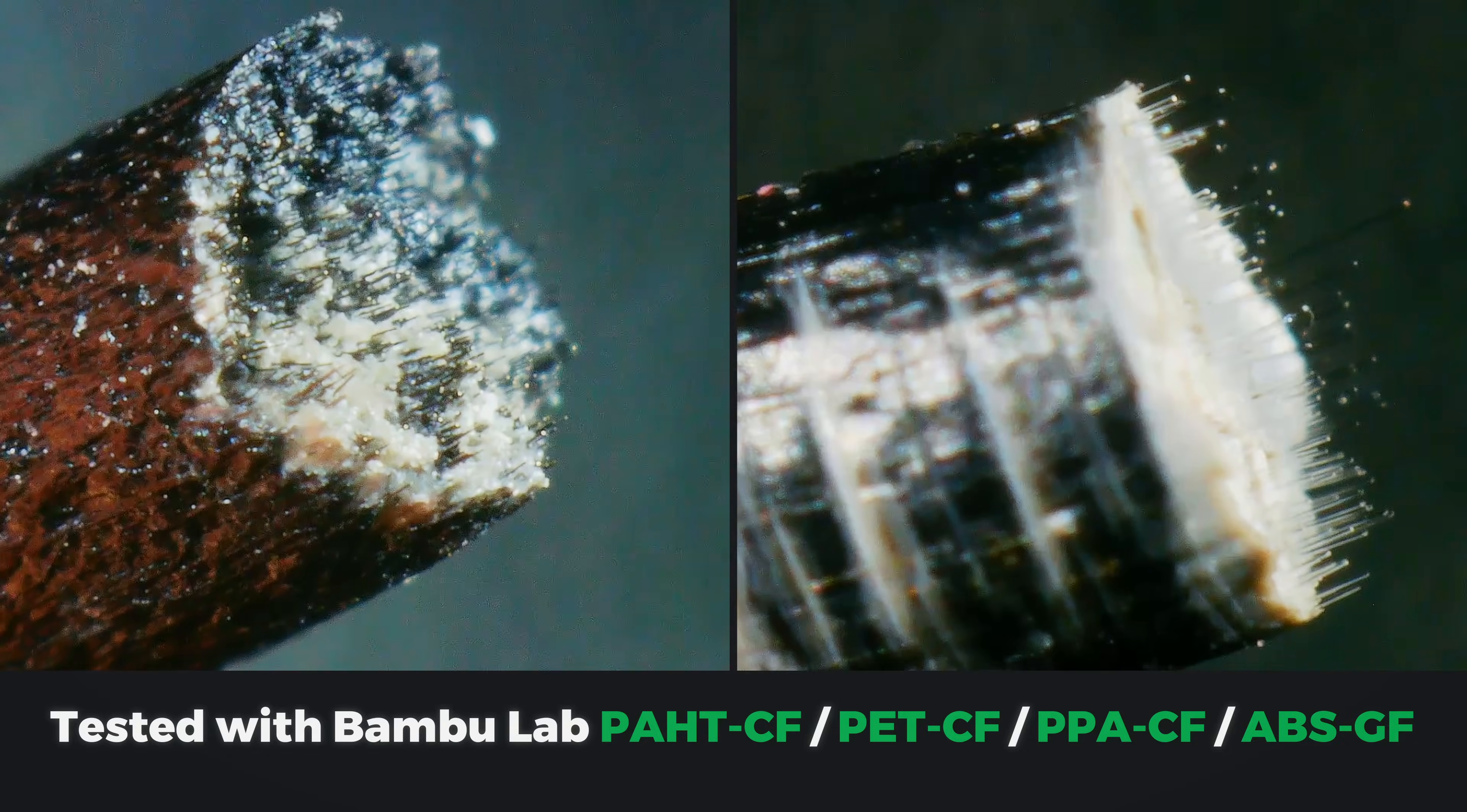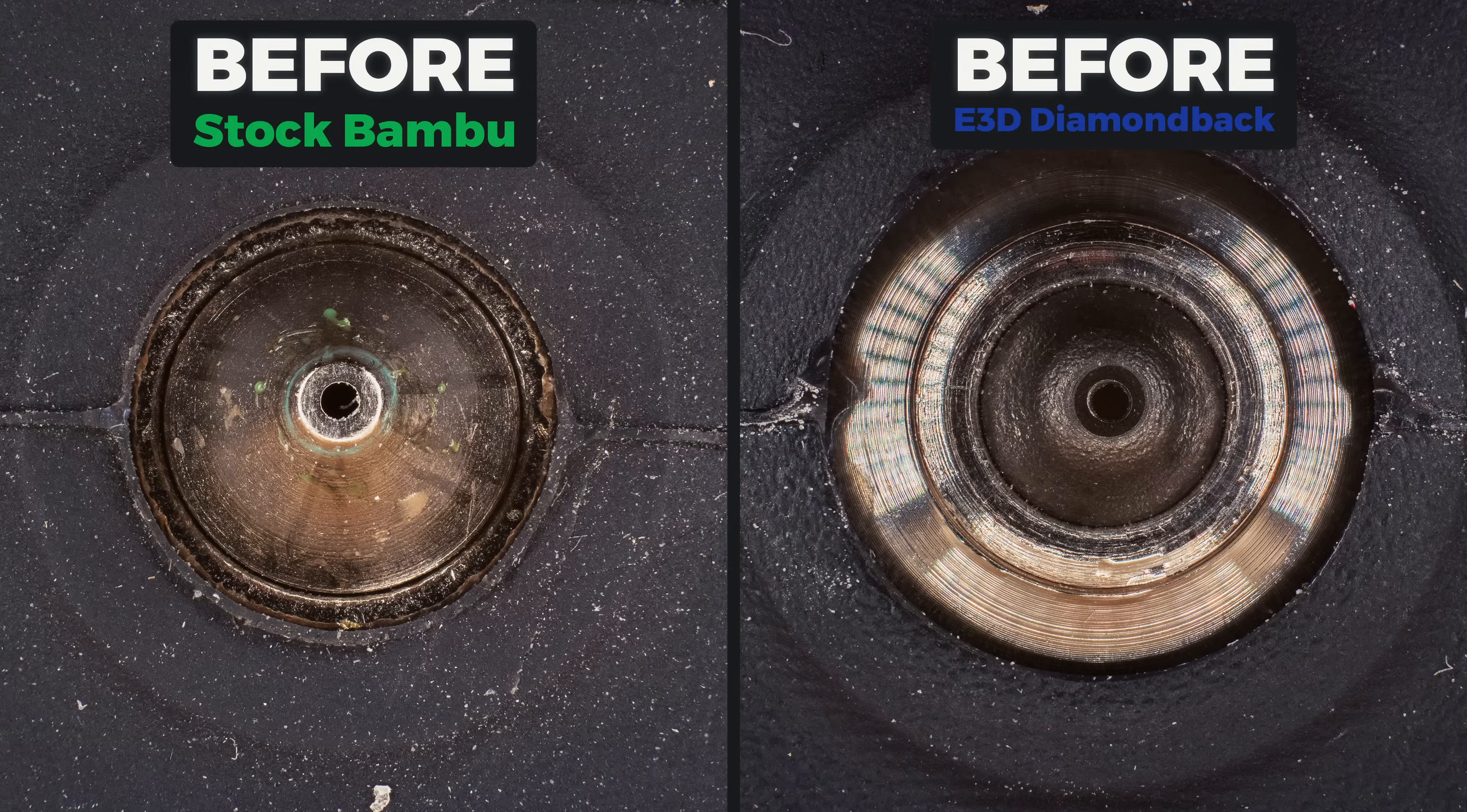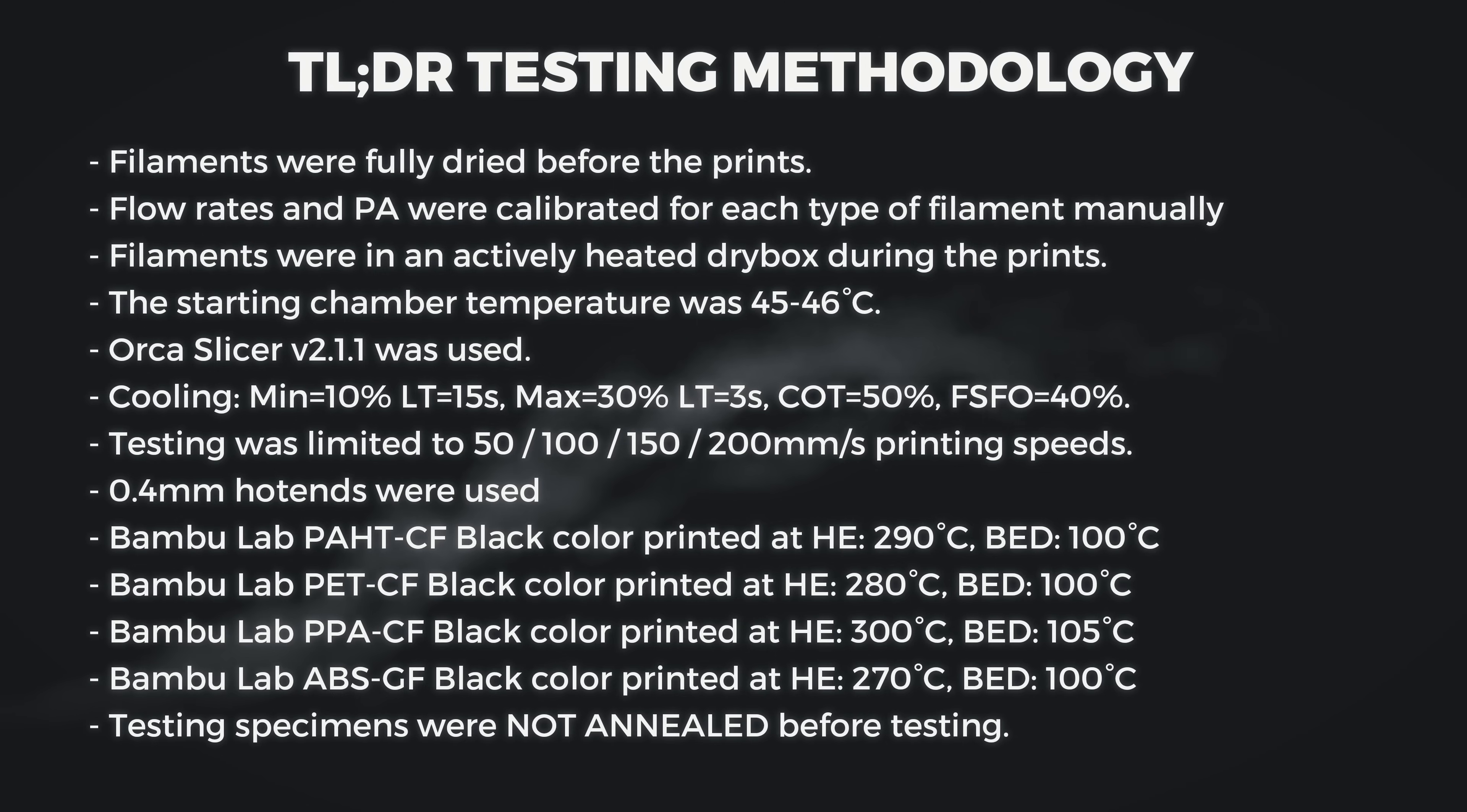So what could be a better way than to test it with Bambu Lab's carbon and glass filled filaments? We will compare how well these two hotends bond the layers of our prints, look at before and after macro shots of the nozzles, and analyze if that diamond tip hotend is the right choice for your 3D printer. This video was sponsored by PCBWay. So let's dive straight into the testing results. These are the main details about my testing, so if you want to read them all, please pause the video.